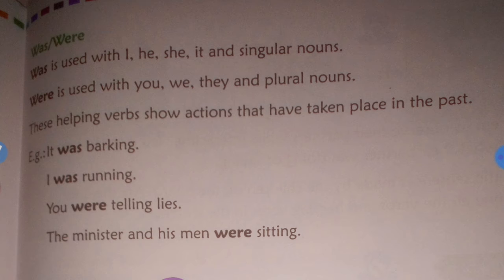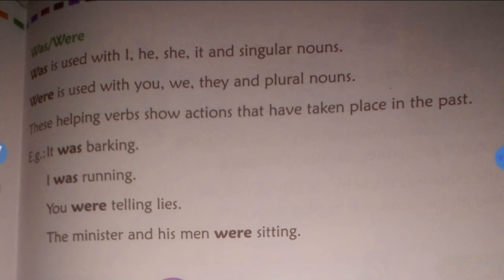'Was' is used with he, she, it, I, and all singular nouns — singular number nouns. 'Were' is used with you, we, they, and all plural nouns. These helping words show action that has taken place in the past.